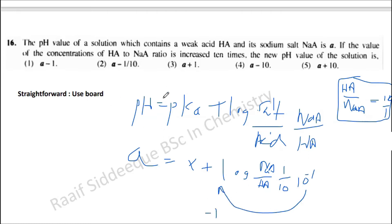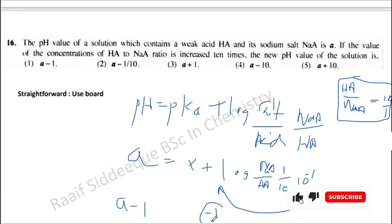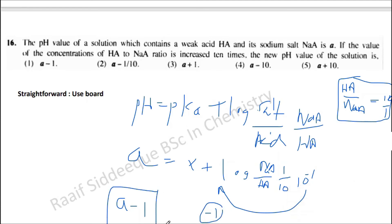So finally your pH would be a minus 1, because initially you had pH equal to a. But when you change the concentration 10 times of HA over NaA, you are reducing the salt-over-acid ratio by 10 times, which reduces the log term by 1. So the new pH is a minus 1.